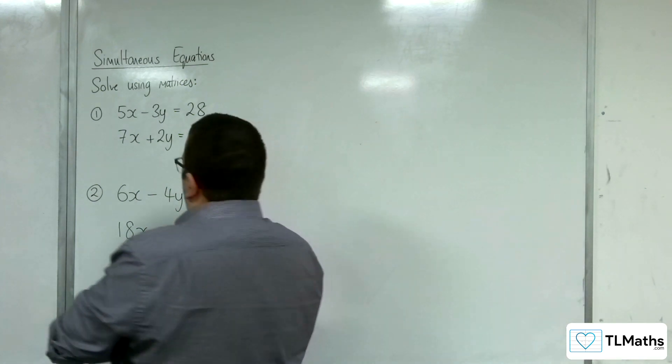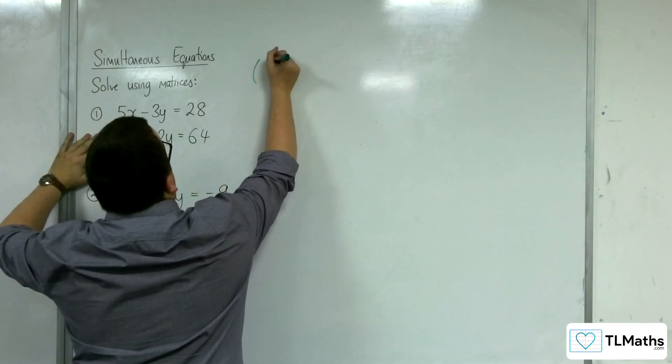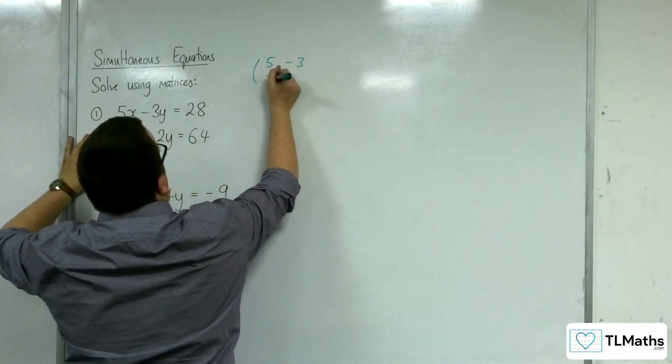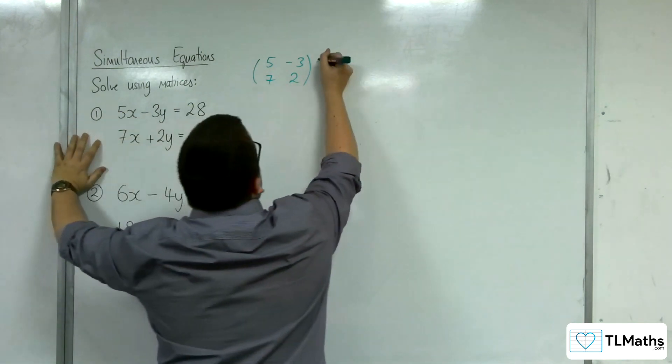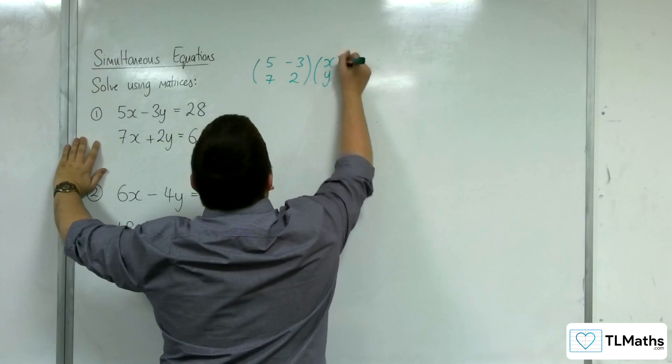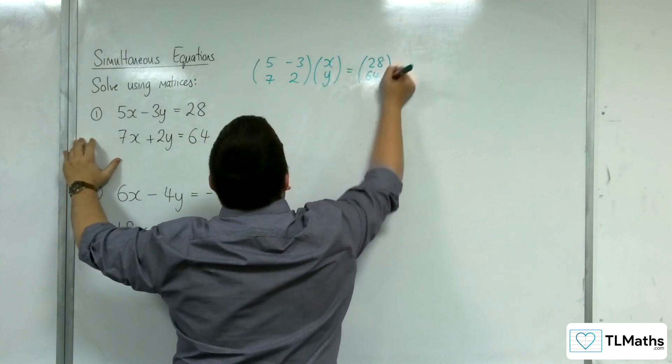With number 1 we have 5, -3, 7, 2. So the coefficients of the x's and y's multiplying with x, y will be equal to 28, 64.